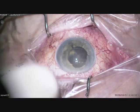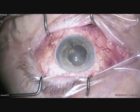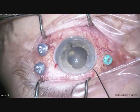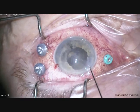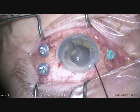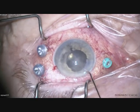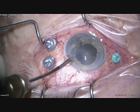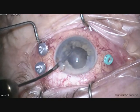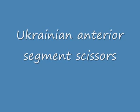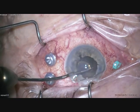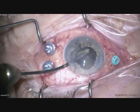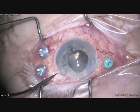Here again is the operative video. I'm trying now to remove the membrane in the pupil. This is a Ukrainian anterior segment scissors. I'm cutting the membrane — it is black.